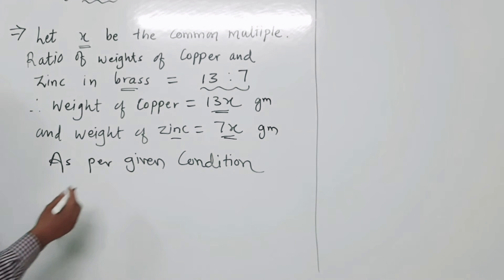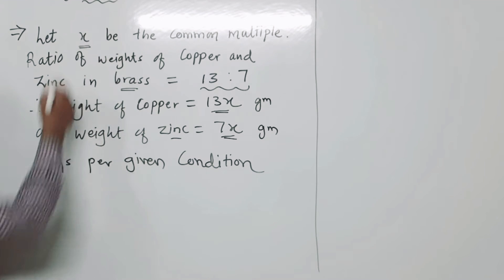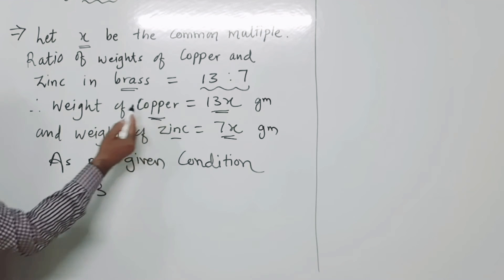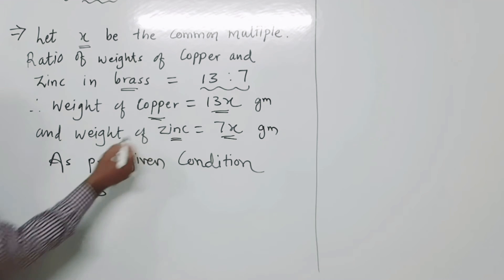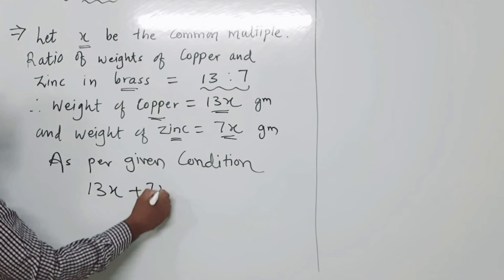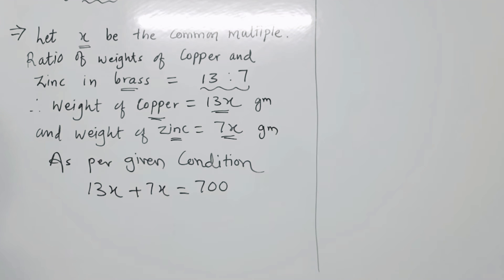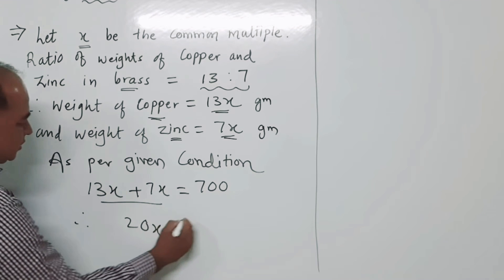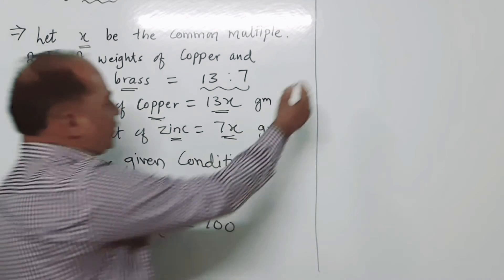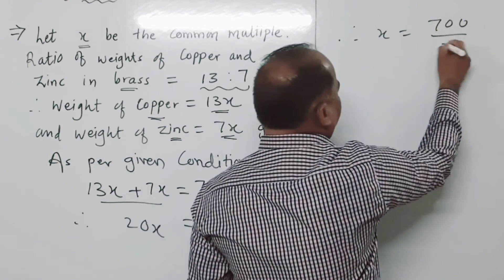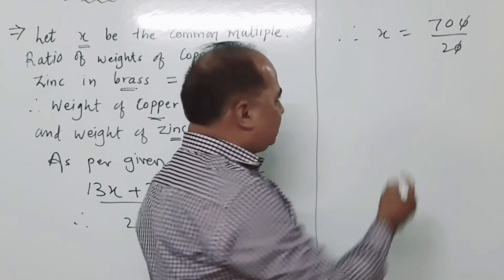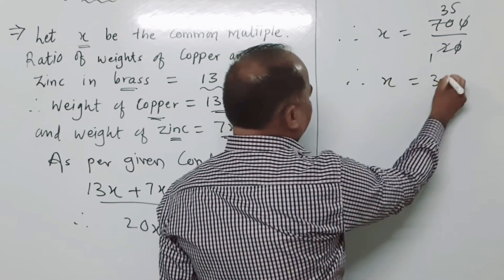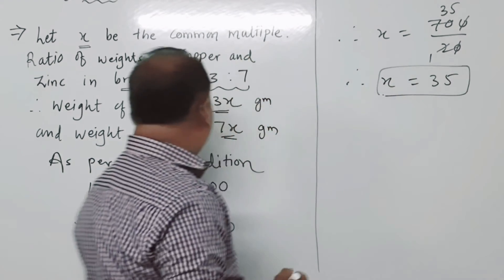As per the given condition, the total weight of the utensil is 700 grams. Brass is made up of zinc and copper, so 13x plus 7x equals 700. Therefore 20x equals 700. Therefore x equals 700 divided by 20, which equals 35.